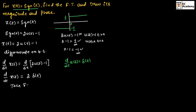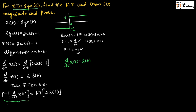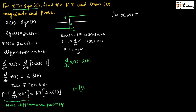Now let us take the Fourier transform on both sides. The Fourier transform of d/dt x(t) equals the Fourier transform of 2δ(t). For the left-hand side, using the time differentiation property, the Fourier transform of d/dt x(t) equals jω · X(jω). For the right-hand side, the Fourier transform of δ(t) equals 1, so we get 2. Therefore, X(jω) equals 2 divided by jω — this is the Fourier transform of the signum function.